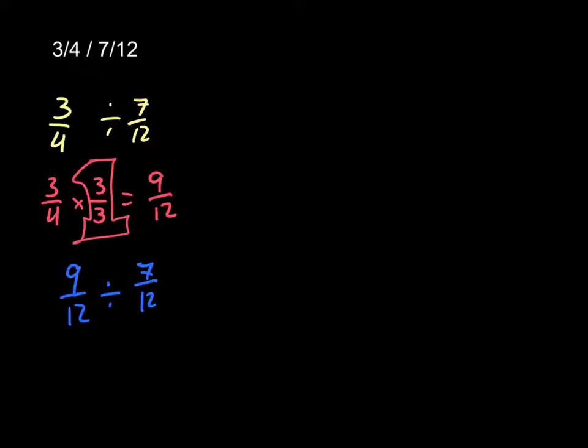Try this one on your own, using the strategy of common denominators. 3 fourths divided by 7 twelfths. Now, when you solved it this way, you probably approached it similarly to what I did, because I did ask you to do common denominators.